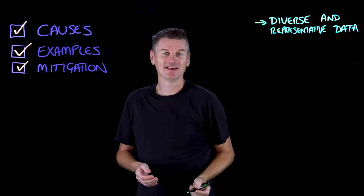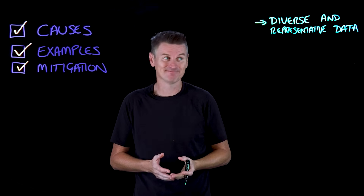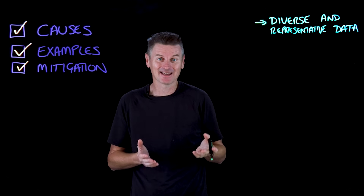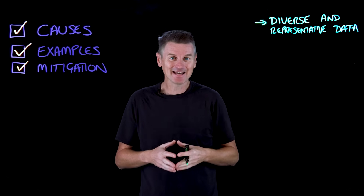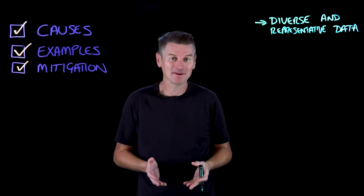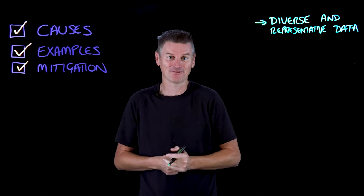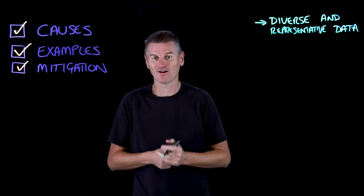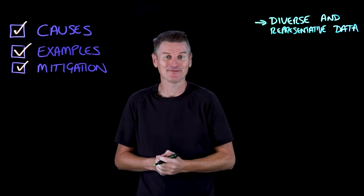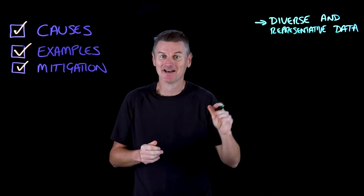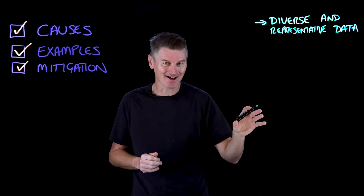First up is diverse and representative data. Machine learning is only as good as the data that trains it. Data fed into machine learning models must be representative of all groups of people and reflective of the actual demographics of society — unlike, say, a training data set filled with only male resumes. But good representative data is just the start.